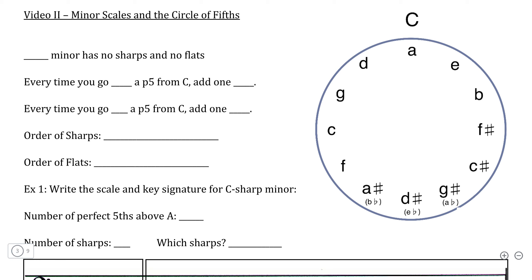In this video, we're going to look at how the circle of fifths can be modified in order to determine the key signature and pitch composition of a minor scale directly, without having to find the relative major scale first.